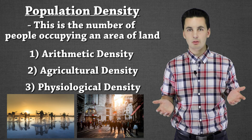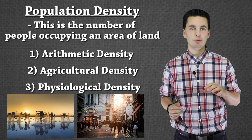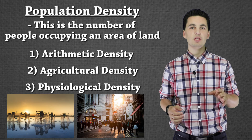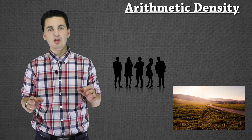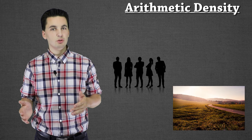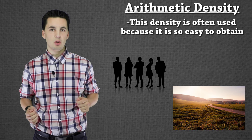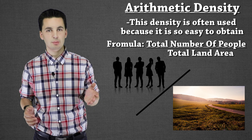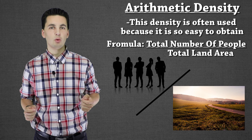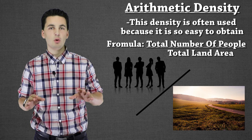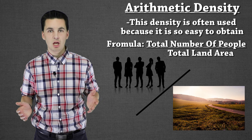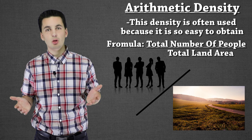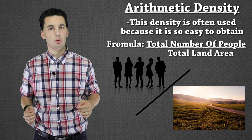Each of these on their own are important, but they're even more important when we compare them because we can see overall themes and they tell us a lot about a country or society. Our first one is arithmetic density — the easiest density to figure out. It's used a lot because of how easy it is to obtain. All it shows us is how many people are living in a certain area. We take our total number of people and divide it by our total land area. This includes areas that people probably can't live in — if we're looking at a country, this is their total square footage everywhere, including spots where people aren't living.